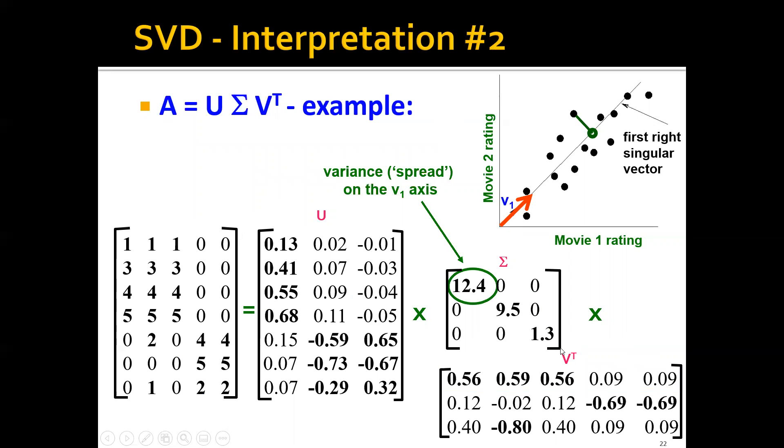If you turn our attention to the sigma matrix, the first element of this sigma matrix is actually the variance or spread on the V1 axis. So the larger it is, the larger variance the points will be when they are projected onto this XV1.